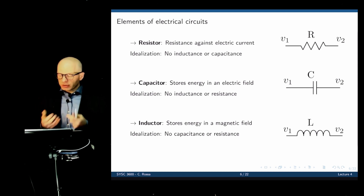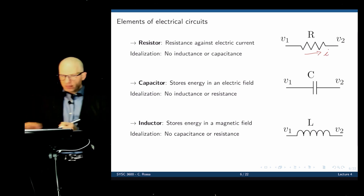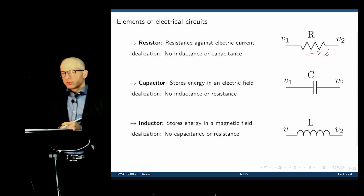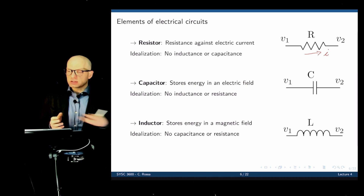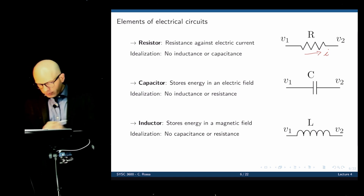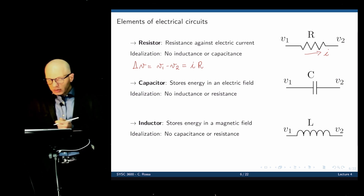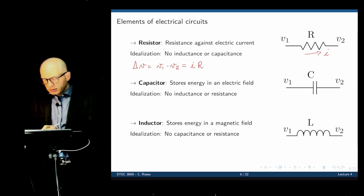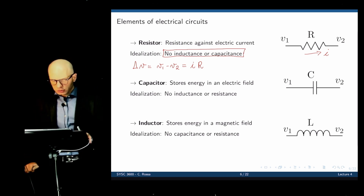We are using a lumped model to describe these resistors, meaning an entire system with a given resistance is represented by one element. The resistor is represented by its symbol, and with current I flowing through it, there is a voltage drop between the two sides. The magnitude of that voltage drop is delta V equals V1 minus V2, which equals the current times the resistance — Ohm's law. We assume the resistor is ideal with no inductance and no capacitance.